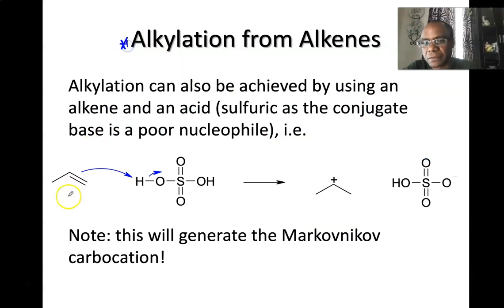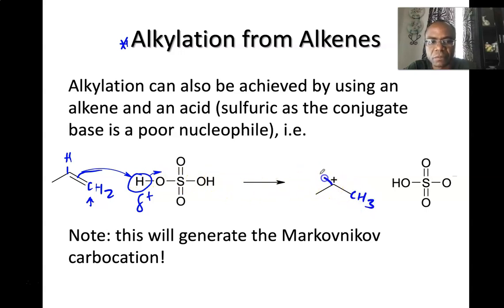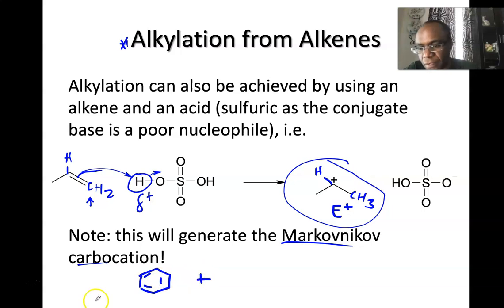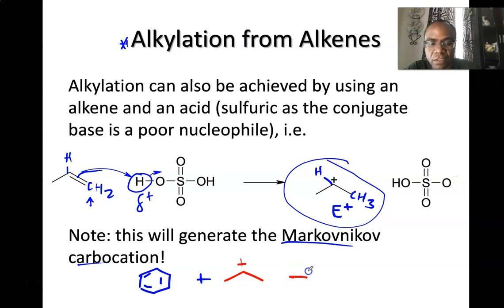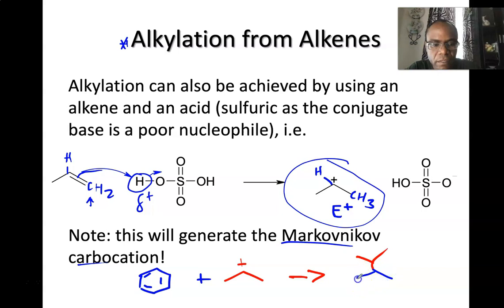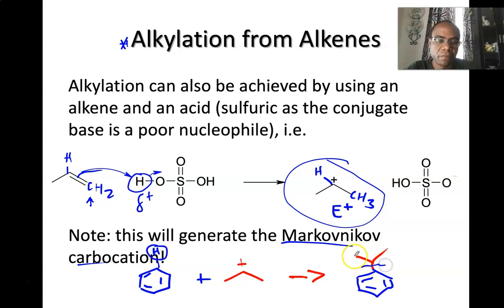Another way to alkylate is by using an alkene with an acid catalyst. For example, benzene with propene in the presence of H⁺: the propene first forms a carbocation via Markovnikov addition — the hydrogen goes to the carbon with more hydrogens, giving a secondary carbocation. This carbocation then acts as the electrophile and is attacked by the ring in electrophilic aromatic substitution, replacing a hydrogen with the isopropyl group.